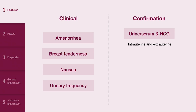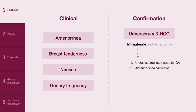Clinical features of intrauterine pregnancy include a uterus that is appropriately sized for gestational age, absence of pain or bleeding, and auscultation of the fetal heart. These findings can also be confirmed by ultrasound.